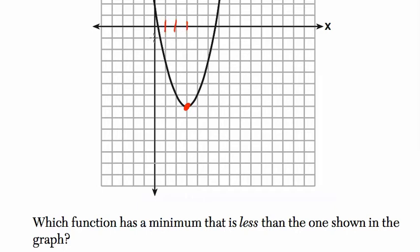And that is the point 1, 2, 3, and then down 1, 2, 3, 4, 5, 6, 7. So it's the point 3, negative 7. So for a minimum to be less than this, it has to be lower than negative 7.